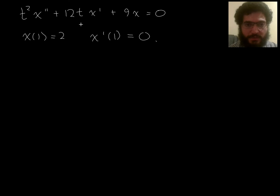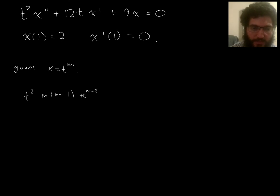Okay, so let's do this one. So step 1, guess x equals t to the m. Plug in the guess. So I get t squared times m times m minus 1 times t to the m minus 2. Plus 12t times m t to the m minus 1, plus 9 t to the m, equals 0.